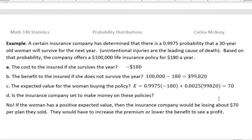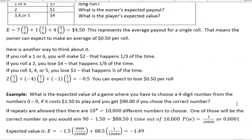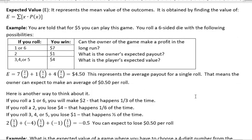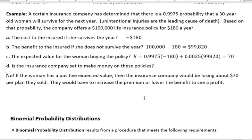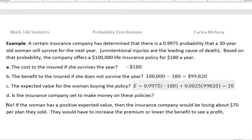If one person has a negative expected value, then the other person has a positive, and vice versa. Looking at the previous example, when the person who owned the game was going to make $0.50 per roll, then the person playing the game was set to lose $0.50 per roll. So for this insurance company problem, if the woman has a positive expected value, then the insurance company is set up to lose money on that policy.